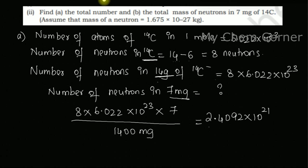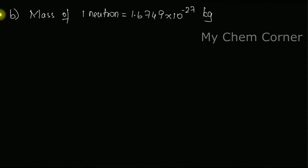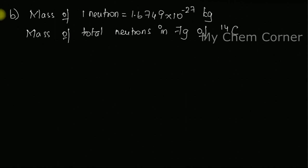For part (b), I need to calculate the total mass of the neutrons. The mass of one neutron is given in the question as 1.6749 × 10⁻²⁷ kilograms. So the total mass of neutrons in 7 milligrams of Carbon-14 is calculated using this value.